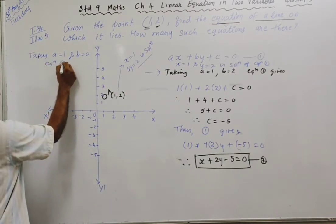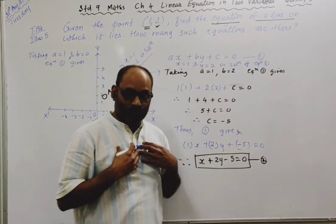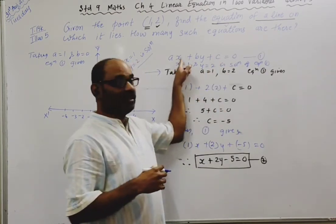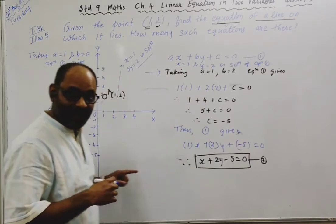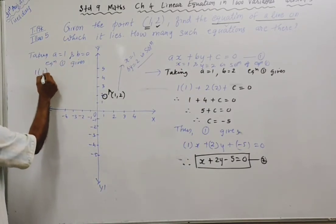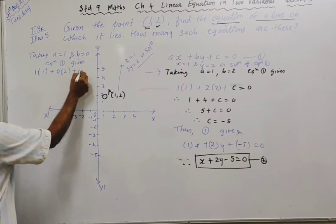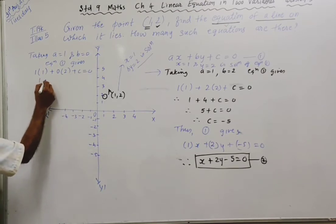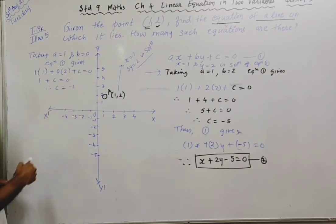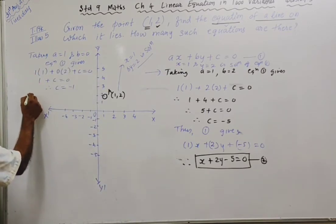Equation one gives: I chose a and b values, now I need to find c. At that time, x and y values are: a is one, so 1·x plus b is zero, so 0·y plus c = 0. So 1 + c = 0, therefore c = -1.